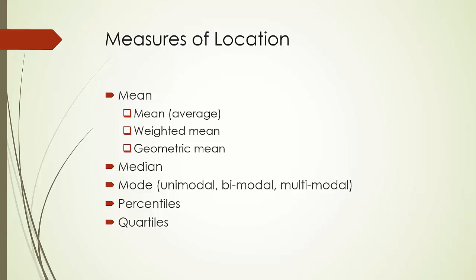Percentile describes how the data are spread over the interval from the smallest value to the largest value. According to the textbook, if we say x is the pth percentile, then at least p percent of the observations are less than or equal to x. And the fiftieth percentile is just the median. This definition is questionable. Suppose we have four numbers: 10, 20, 30, and 40.